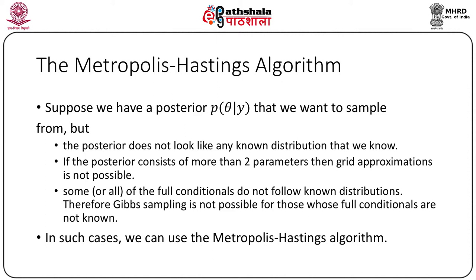Now we will talk about another method for when the complete conditionals are not in closed form. In such cases we have to use a special algorithm called the Metropolis-Hastings algorithm. Suppose we have a posterior distribution P of theta given Y where theta is the parameter and Y is the observation. We want to sample from it but the posterior does not look like any known distribution. If the posterior consists of more than two parameters, grid approximation is not possible, and some or all full conditionals do not follow known distributions, so Gibbs sampling is not possible. In such a case we can use the Metropolis-Hastings algorithm.